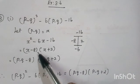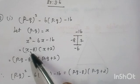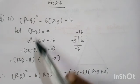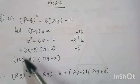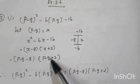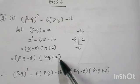Substituting back x equals p minus q, the factors become (p minus q minus 8) into (p minus q plus 2).